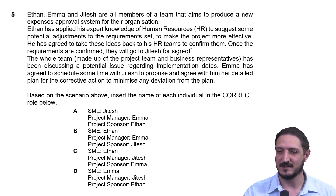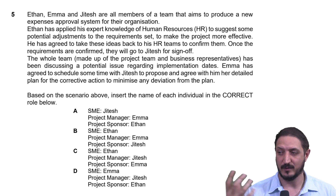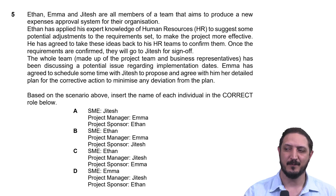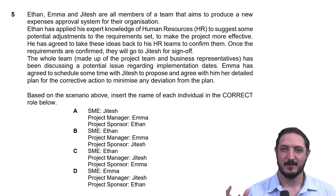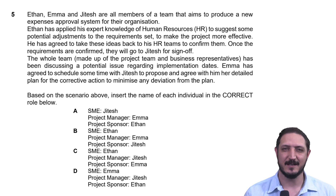We can see that Ethan has applied his expert knowledge of human resources to suggest some potential adjustments to the requirements set. With these particular stakeholders, we often have a subject matter expert — someone who really knows about a particular subject. Within this context, the system being built needs expert knowledge of human resources. Therefore, Ethan is the expert in this field and needs to review these requirements and maybe make adjustments so that when the system is built, it's aligned to the business's objectives.